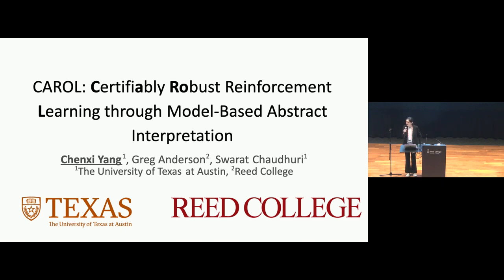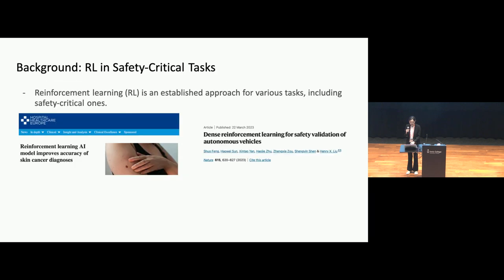Hi everyone. This is Chen Xi from UT Austin and today I will present our work about certifiably robust reinforcement learning through model-based abstract interpretation. This is a joint work with Greg Anderson and Svarvar Chowdhury. Reinforcement learning is an established approach for various tasks including lots of safety-critical ones, such as cancer diagnosis or autonomous vehicles.